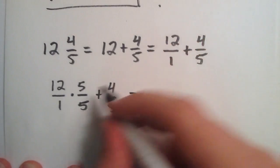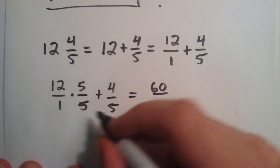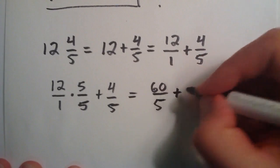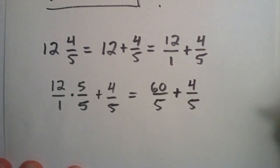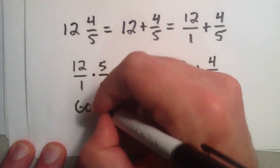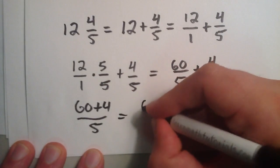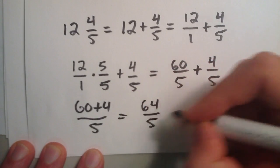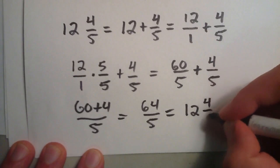And then we do 12 times 5 is 60. 1 times 5 is 5. And we add that to our second term, 4 fifths. Adding the numerators together, we have 60 plus 4 over 5, which is simply 64 over 5, which is equal to the mixed fraction 12 and 4 fifths.